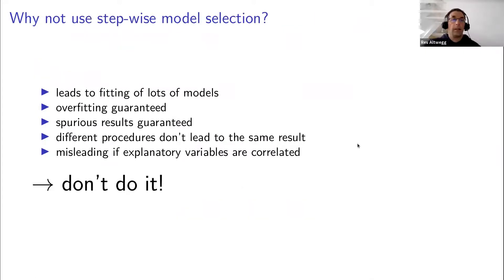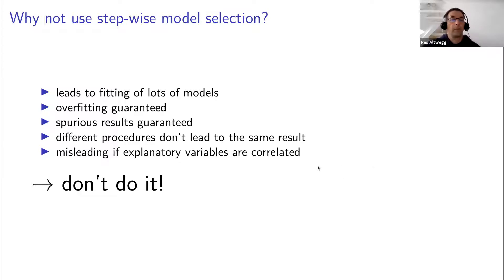A quick note about stepwise model selection: it was earlier taught in stats classes but should just not be used anymore. The reason is the same as on the previous point — you end up fitting lots and lots of models even though you might not be aware of it. The computer in the background fits many models during the stepwise procedure, and you're going to get guaranteed spurious and misleading results, especially if explanatory variables are correlated.